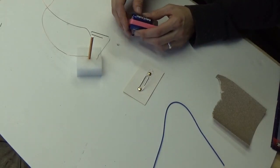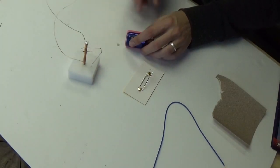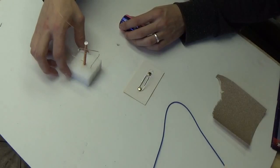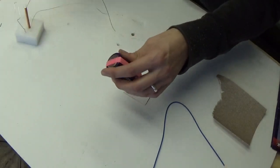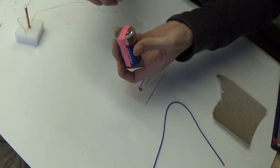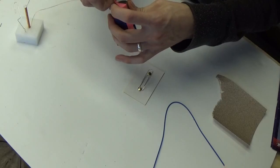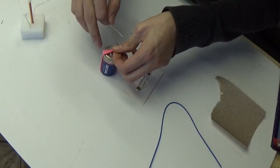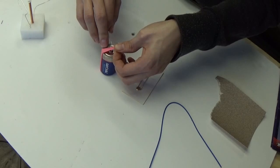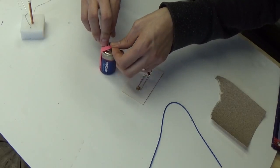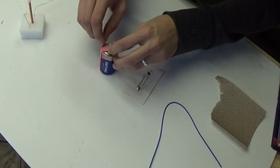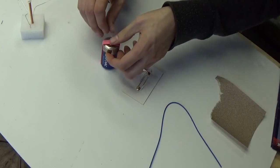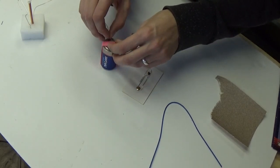So, on one end, you will take the top copper wire and put it on where the button of the battery is. Just like that.